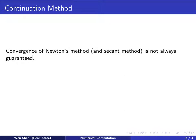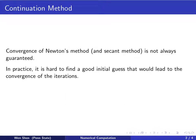For these methods to be successful, it is crucial to find an initial guess that is sufficiently close to the root. However, very unfortunately, in practice it is hard to find a good initial guess that would lead to the convergence of the iterations.